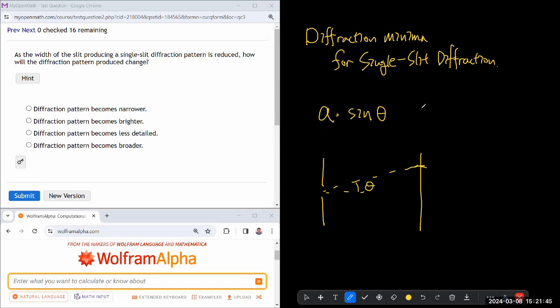When this quantity is equal to any of these possible values on the right hand, an integer, a whole number times lambda, where n is equal to one, two, and so on, then you get single slit diffraction minima.